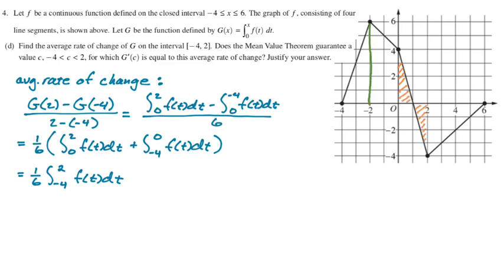So this is, to the left of that line is a triangle. Base is 2. Height is 6. So that's 6. Then this is either a trapezoid or you count boxes. So it's like 2 by 4 is 8. And then you get another half of 4. So 8 plus 2 is 10. So I am getting 1/6th of 16, which is 8/3rds. So that's my average rate of change.